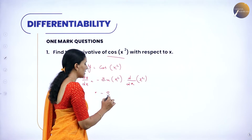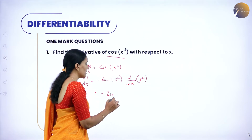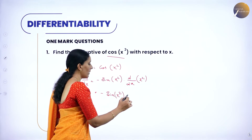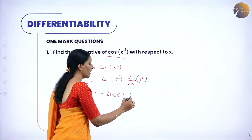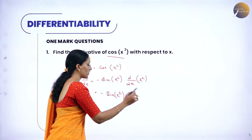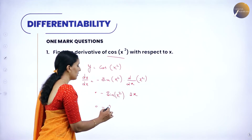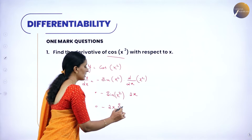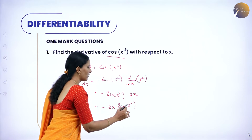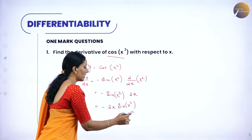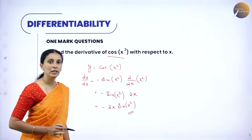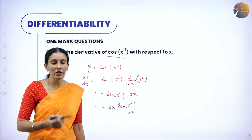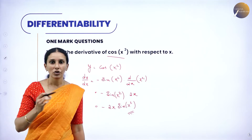Once you differentiate, we get minus sin(x²), and the derivative of x² is 2x, so you can write it as minus 2x·sin(x²). This is the derivative of the given function. Whenever a composite function is given, use the chain rule.